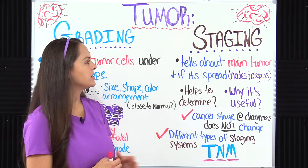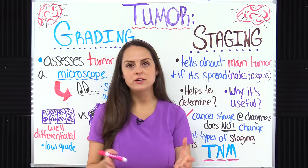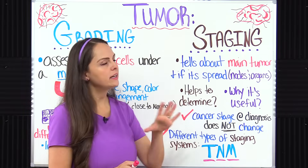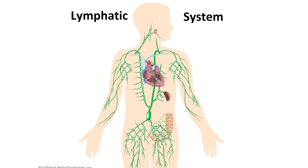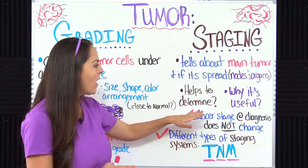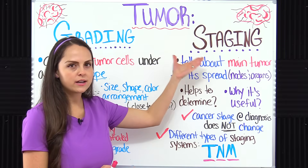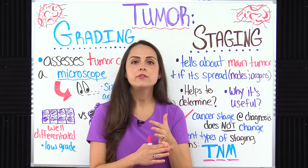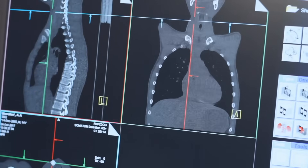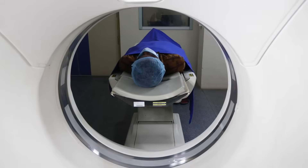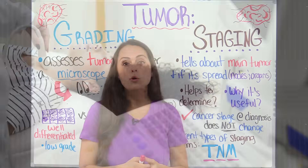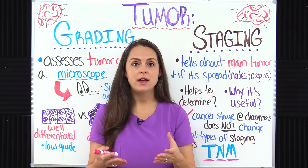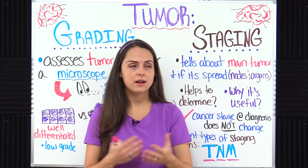Now let's look at tumor staging. This tells us about that main tumor — its location and size — and if it's spread to any other parts of the body, such as the lymph nodes and organs. To determine a patient's stage of cancer, we can look at testing results like an MRI, CT scan, x-ray, or ultrasound, as well as lab results or any physical findings.